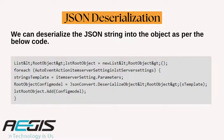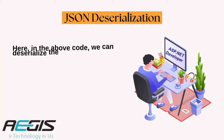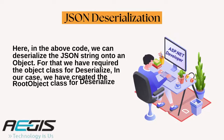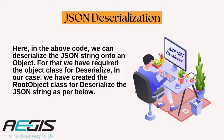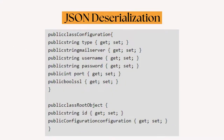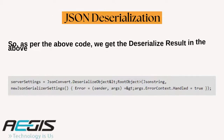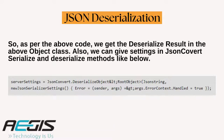Next is JSON deserialization. We can deserialize the JSON string into the object as per the mentioned image code. In the above code, we can deserialize the JSON string onto an object. For that, we require the object class for deserializing. In our case, we have created the root object class for deserializing the JSON string as per the below code image. As per the above code, we get the deserialized result in the above object class. Also, we can give settings in JSON Convert's serialize and deserialize methods as shown in the mentioned code.